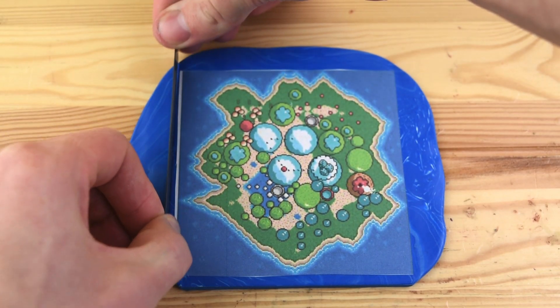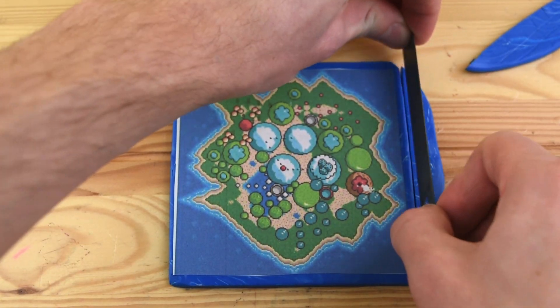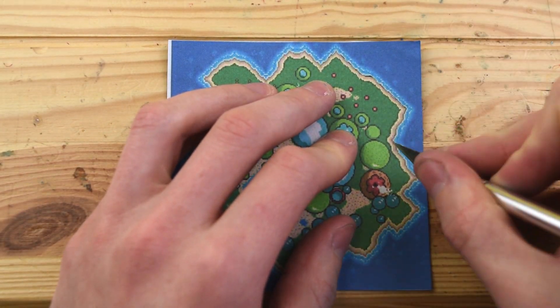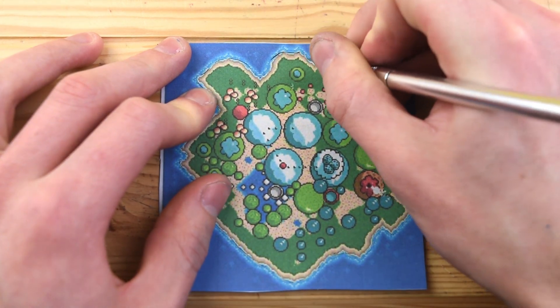We're also going to be using this paper printout. I always use these when I create maps. They're extremely helpful to get the right shape of the islands or maps or whatever you're creating, and they're also really helpful to make sure you get all of the different things like the mountains in the right position.